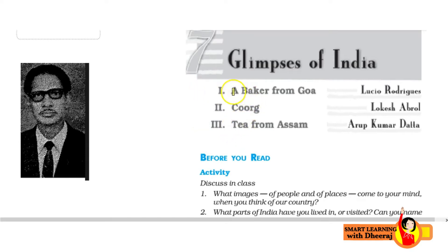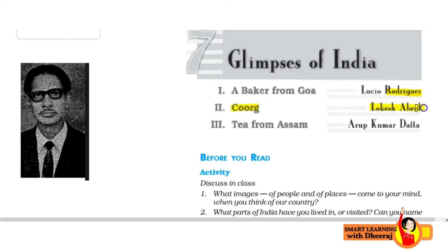The first part is 'A Baker from Goa' — this is by Lucio Rodrigues. The second part is 'Coorg,' it is a place in India, written by Lokesh Abrol. And the third part is 'Tea from Assam,' written by Aroop Kumar Datta.